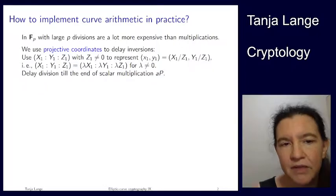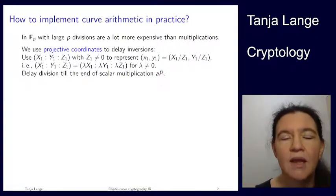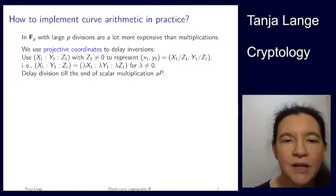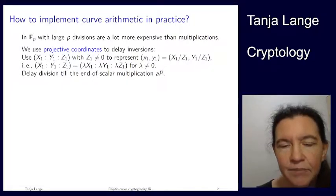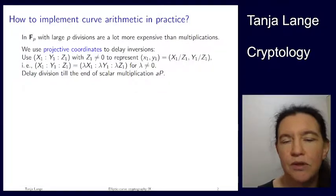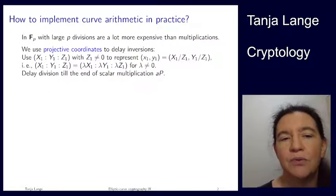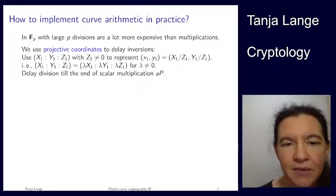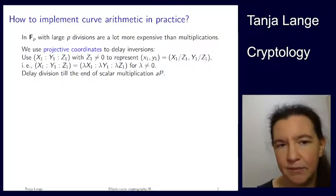This representation is not unique. That's also why I'm not using commas between the coordinates, but I'm using colons. Because if I multiply each of these three coordinates by some nonzero lambda, then I'm getting the same value if I move back to these fractions. So the point X, Y, Z is the same as the point lambda X, lambda Y, lambda Z. So it's a non-unique representation.